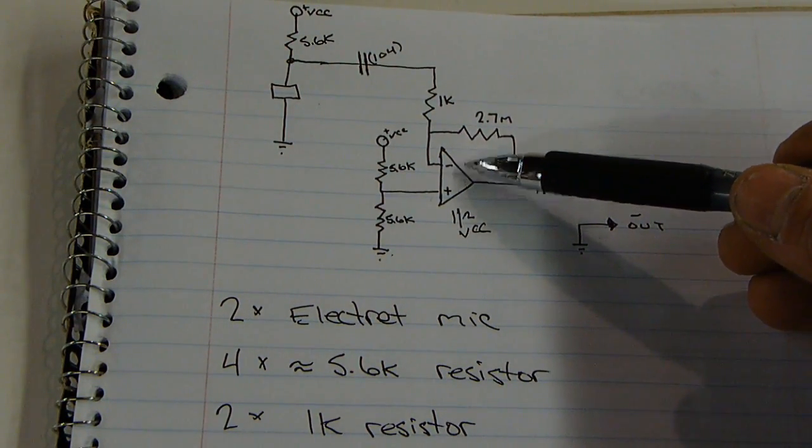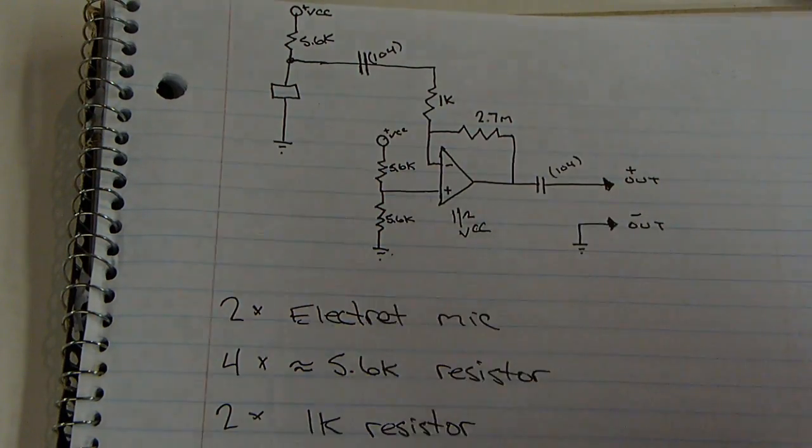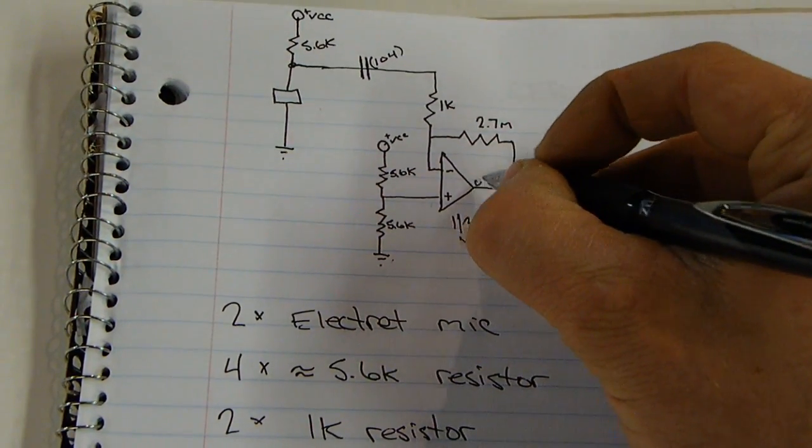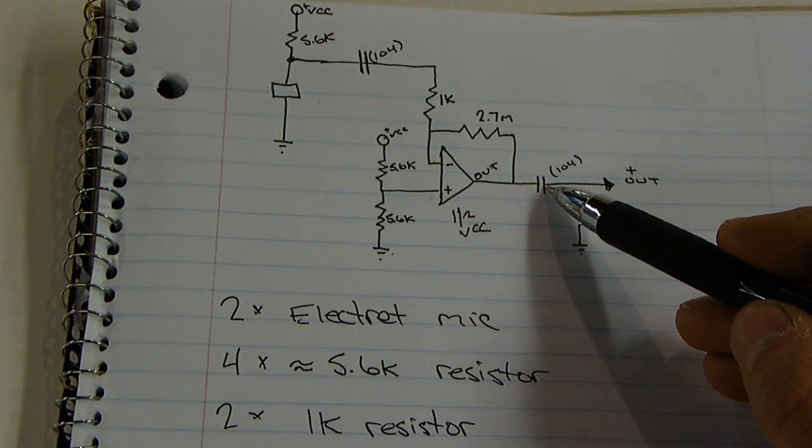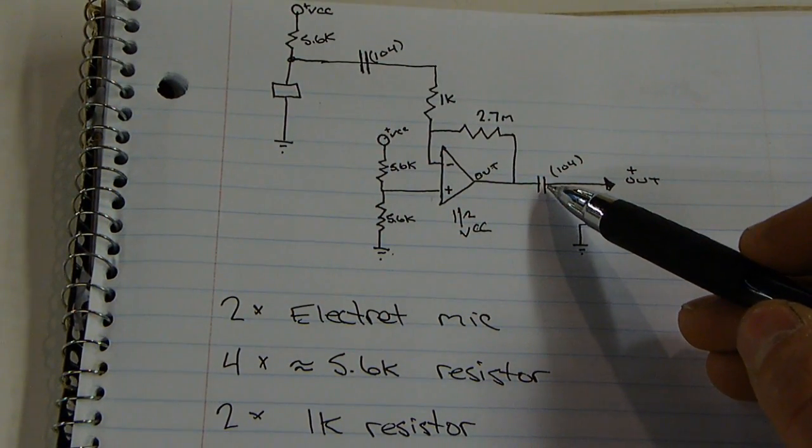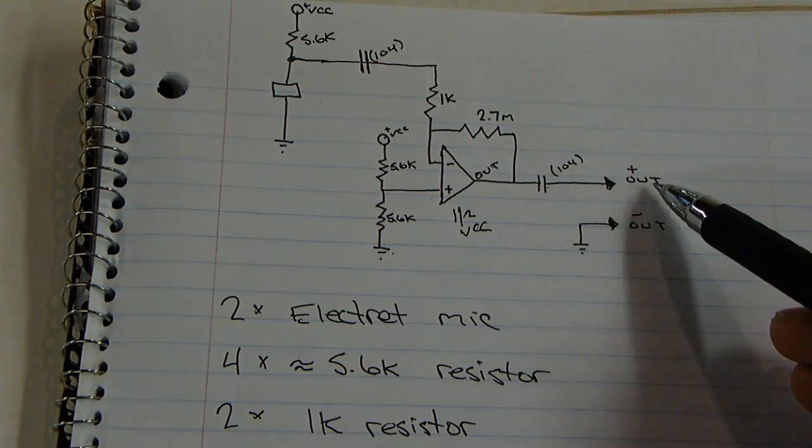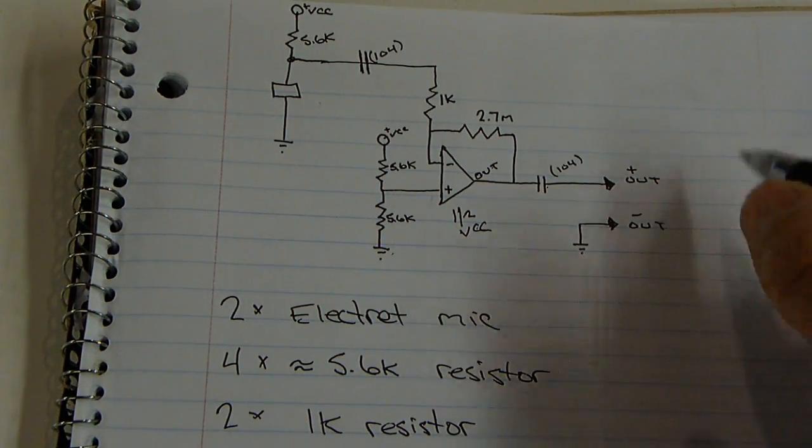Don't worry about what the op-amp is right now. Out of the op-amp, this is out, goes through this capacitor, which filters out again any DC and just lets the AC come through, and to the headphones.